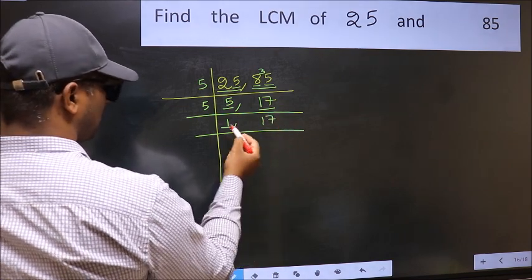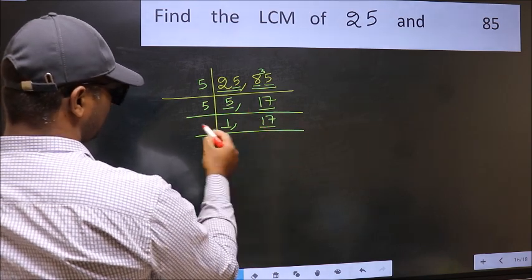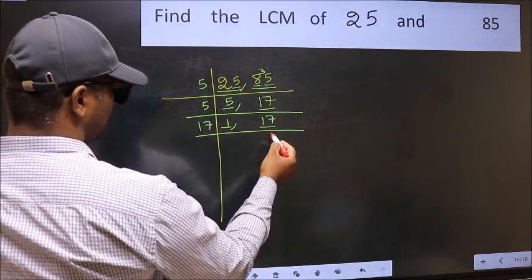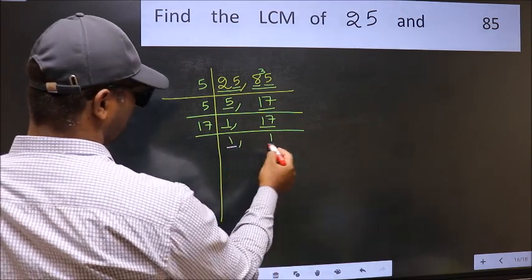Now, we got 1 here, so focus on the next number, 17. 17 is a prime number, so 17 once is 17. So, we got 1 in both places.